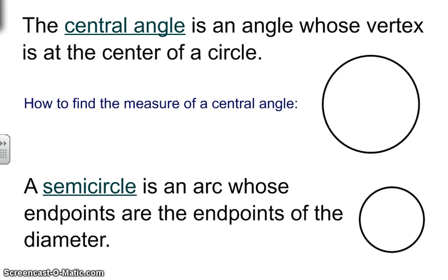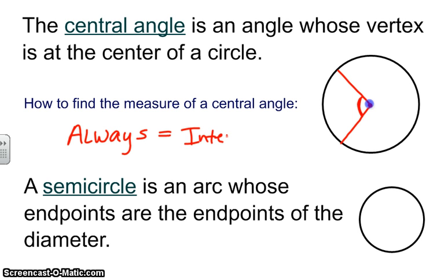First we want to learn about the central angle. It is an angle whose vertex is at the center of the circle. You can create two radii which are going to be the sides, so that's your central angle. A central angle is always equal to an intercepted arc.